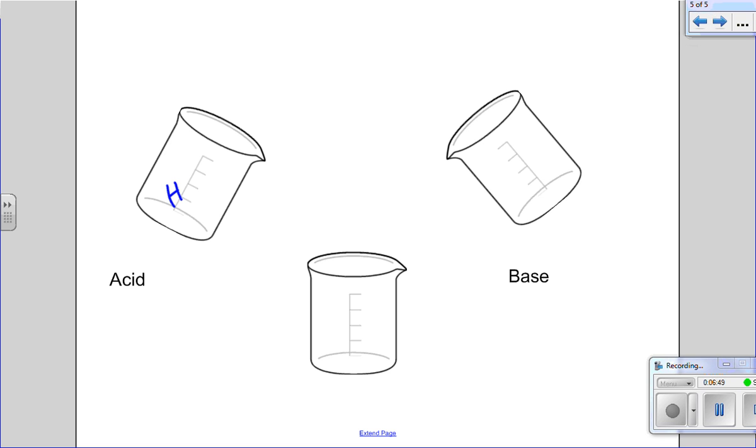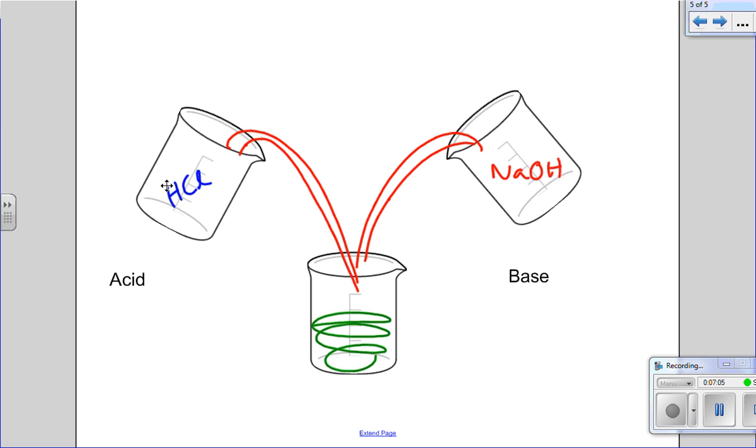So if we have hydrogen chloride here and sodium hydroxide here, and they pour in, what we have that fills up this beaker is a bit of salt and some water. Now we will test that. You'll have to design an experiment and so forth.